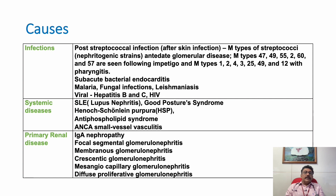Other primary kidney diseases like IgA nephropathy, focal segmental glomerulonephritis, membranous glomerulonephritis, mesangiocapillary glomerulonephritis, and diffuse proliferative glomerulonephritis — all these nephritides explained in the last part of this slide can also produce nephrotic syndrome.